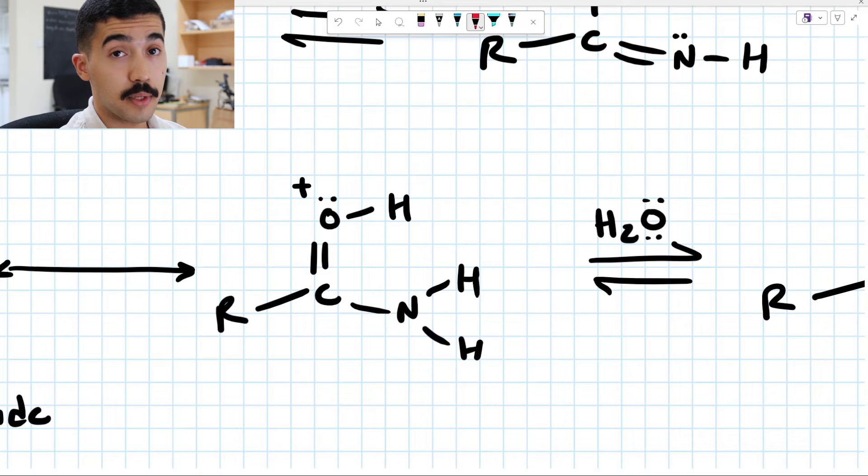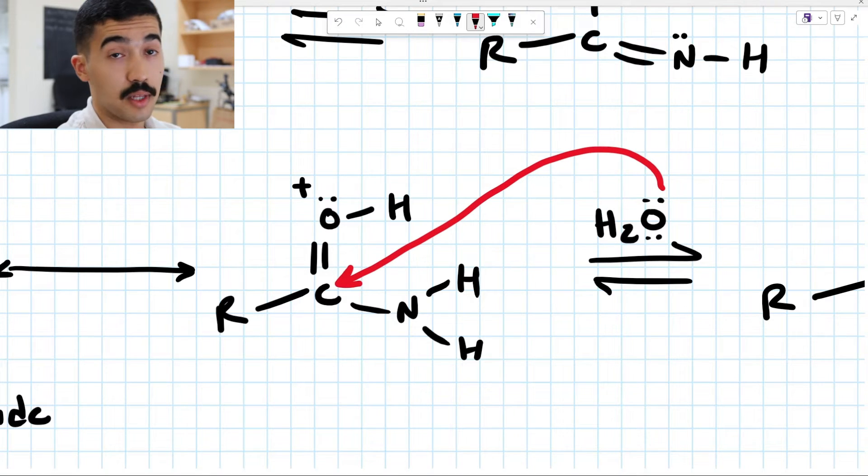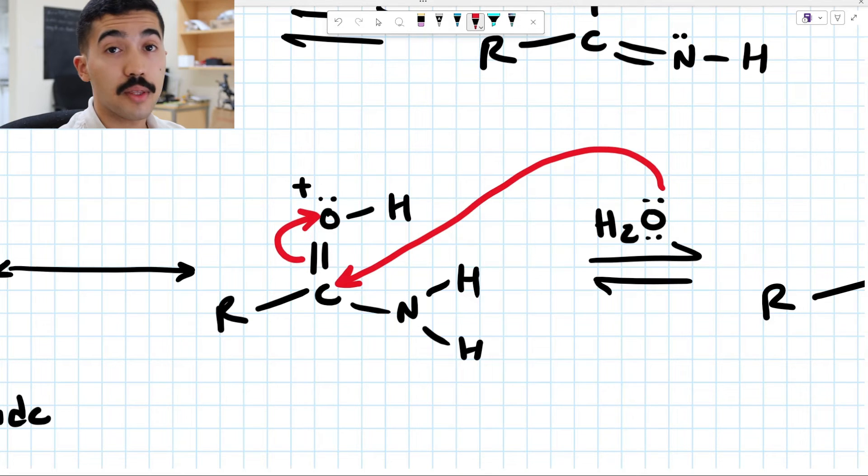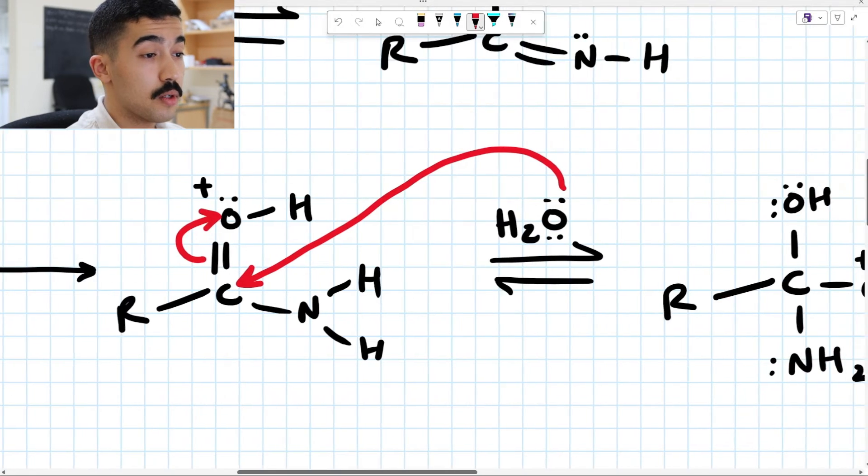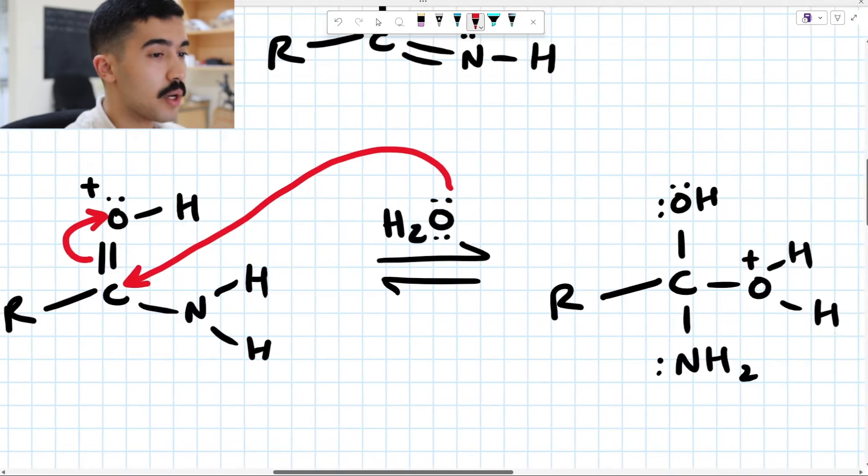What's going to happen is now H2O will come in. It's going to come in and attack this carbon atom. When it does that, you're going to break the C double bond O. Electrons collapse towards oxygen. I'm repeating myself here, but at this point, you guys get how this mechanism works or how mechanisms in general work.